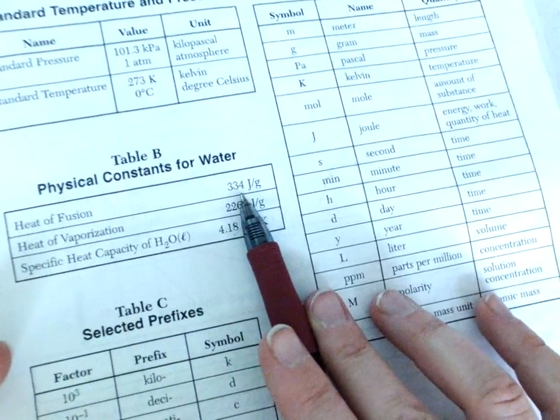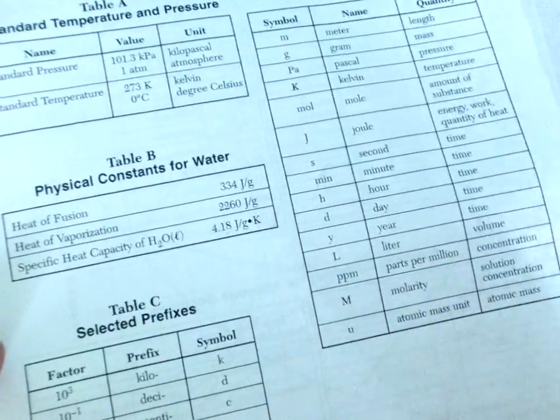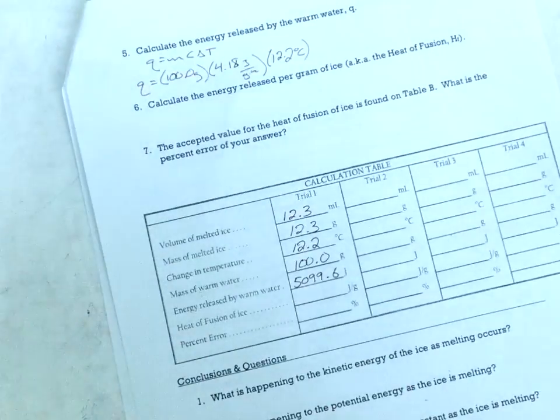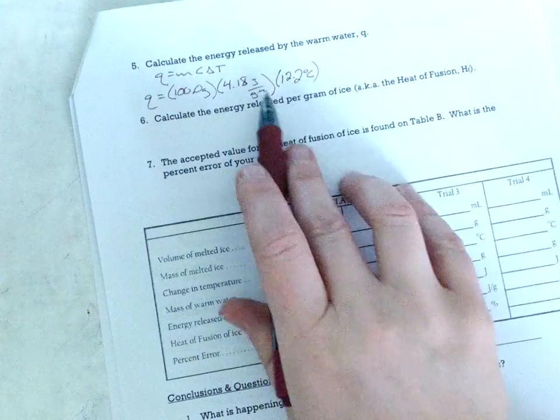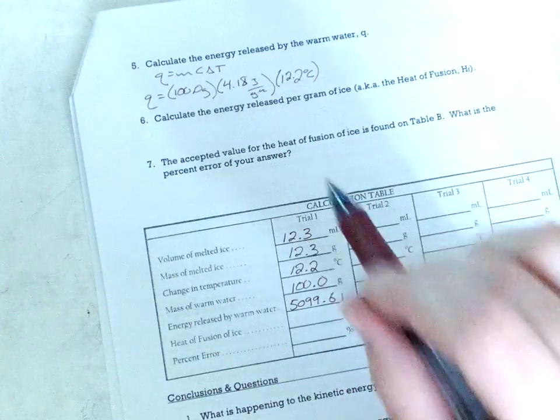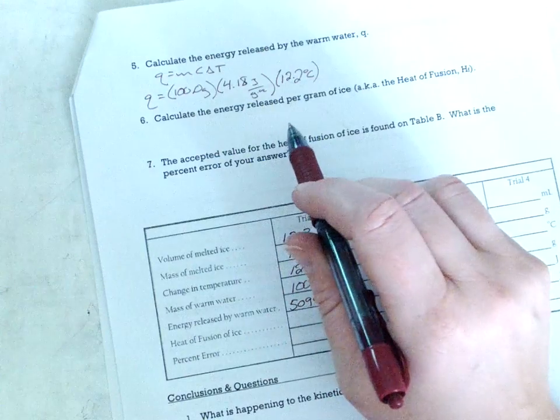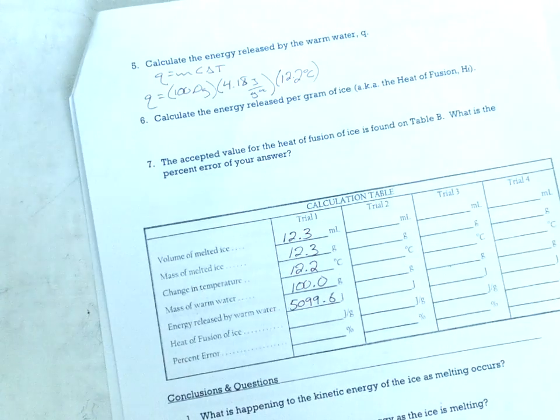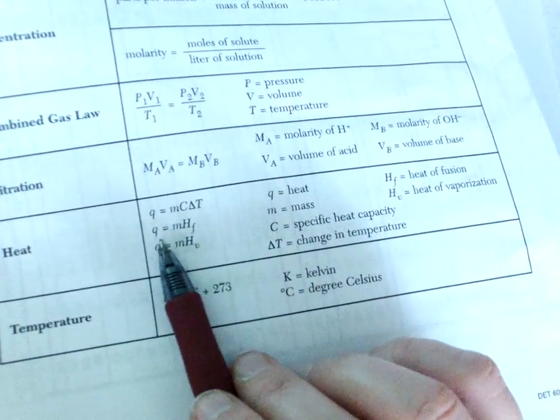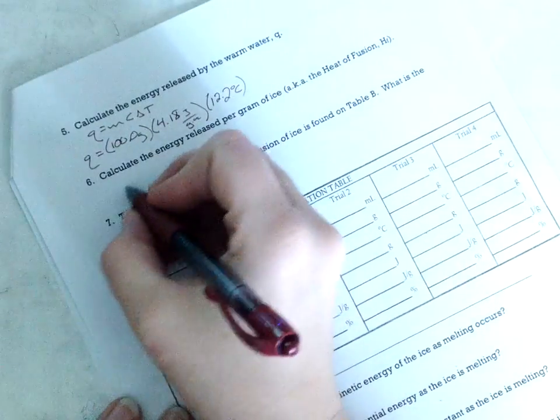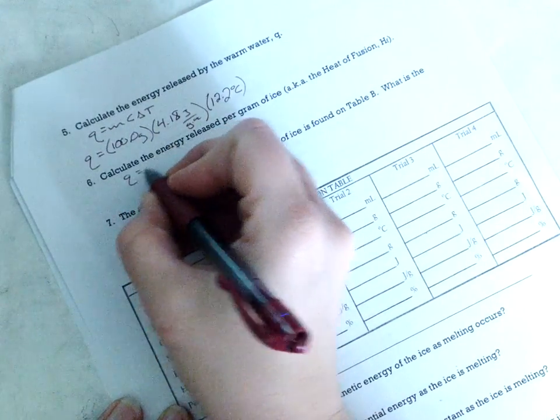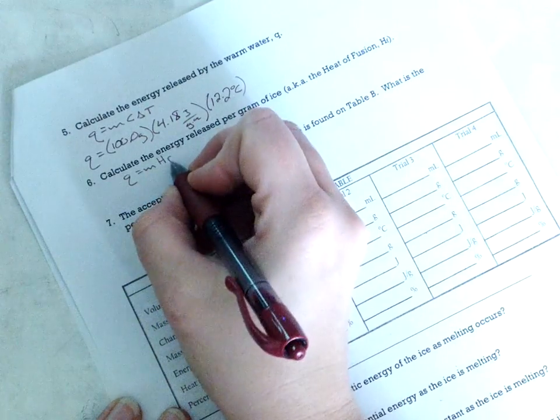Now the heat of fusion of ice also known as solid water is 334. So isn't that the answer? No. Don't use 334. We are pretending we don't know that it's 334 and you're going to calculate it from your data. If you're really good you'll get a number close to 334 here. But of course we're still going to use this equation. Q equals MHF. Because we're talking about melting, we're talking about fusion.